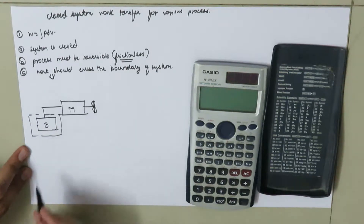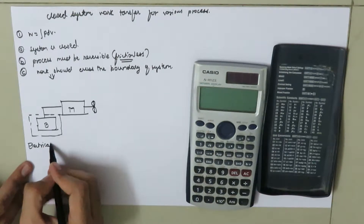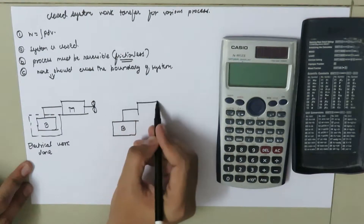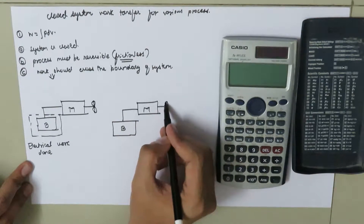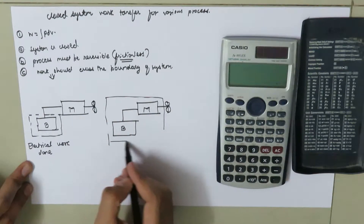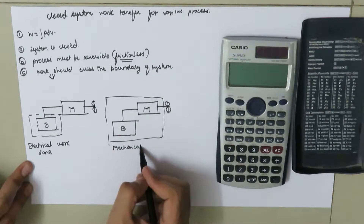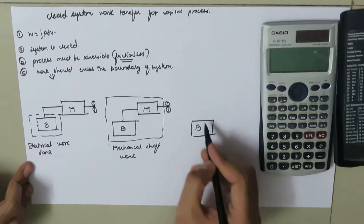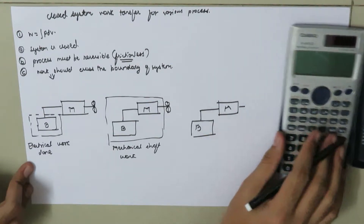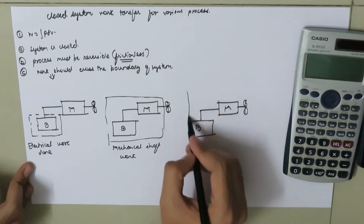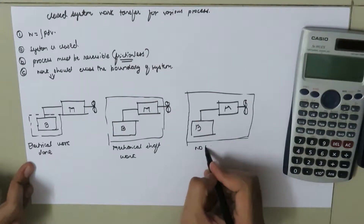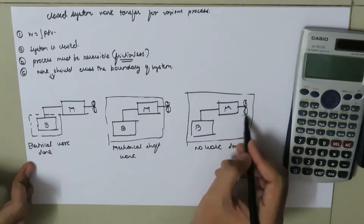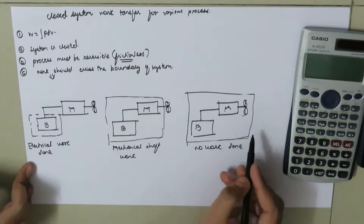If we establish a boundary across the battery, this will be called electrical work done. In another case, if the boundary is placed around the motor and shaft, this will be called mechanical shaft work. In the third case, if we establish a boundary enclosing the battery, motor, shaft, and fan together, this will be called no work done, because the work is not crossing the boundary of the system — even if the fan is rotating, it is no work done.